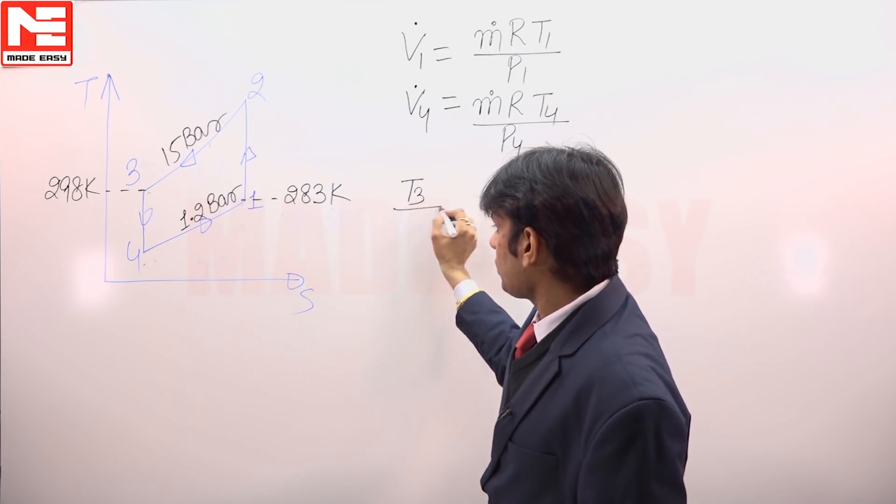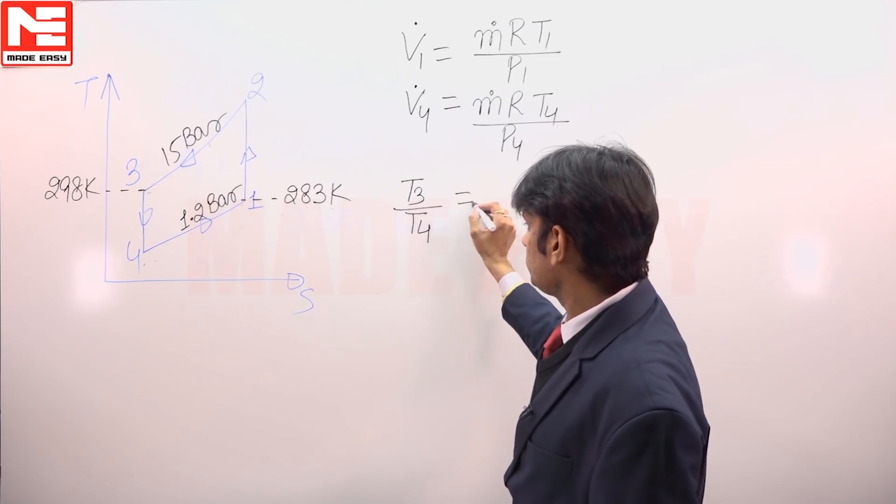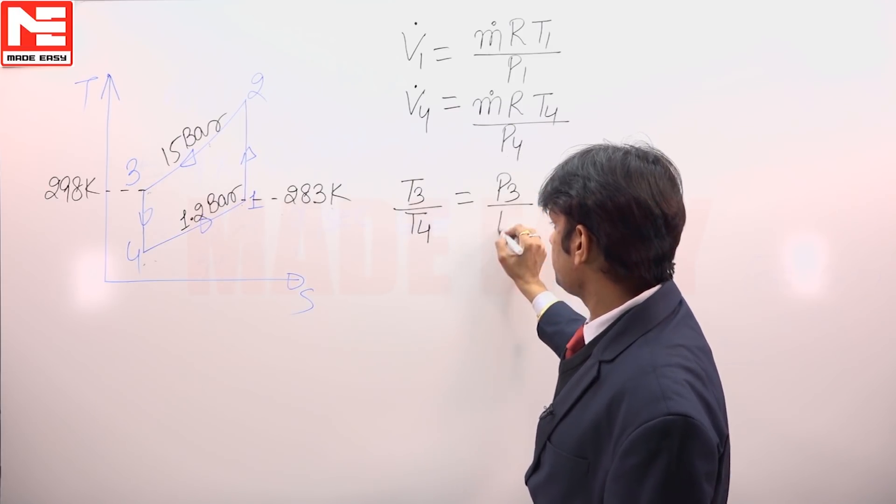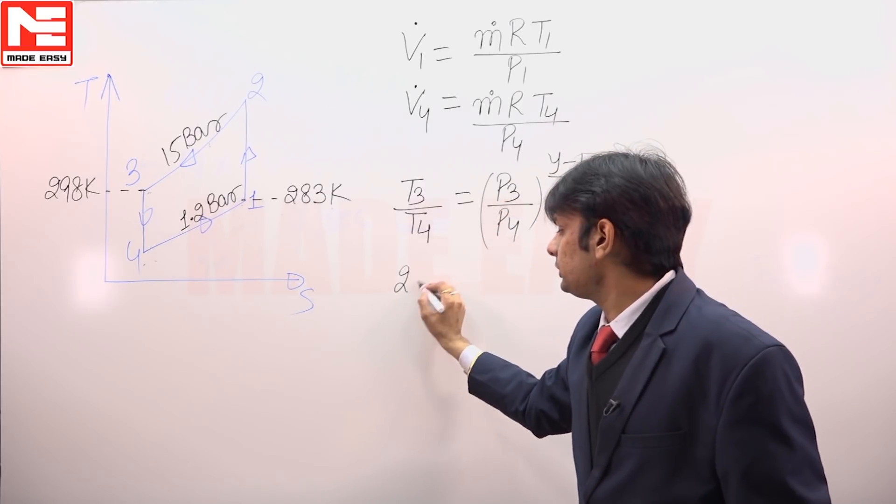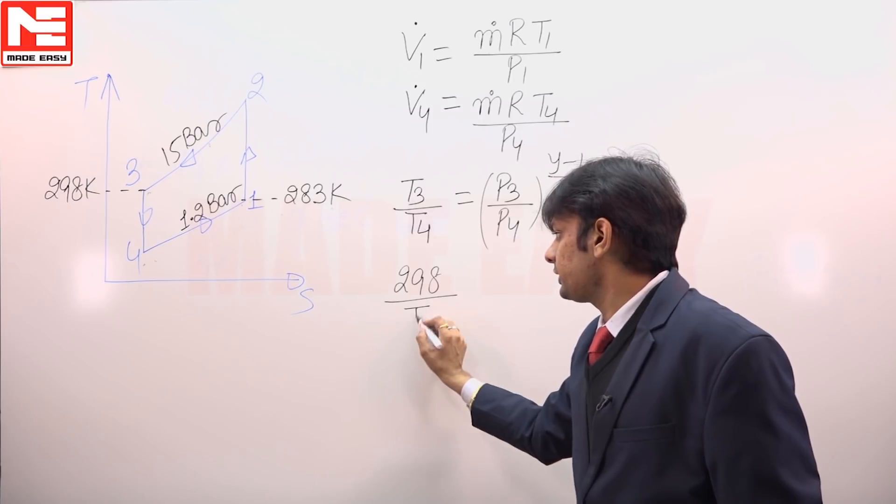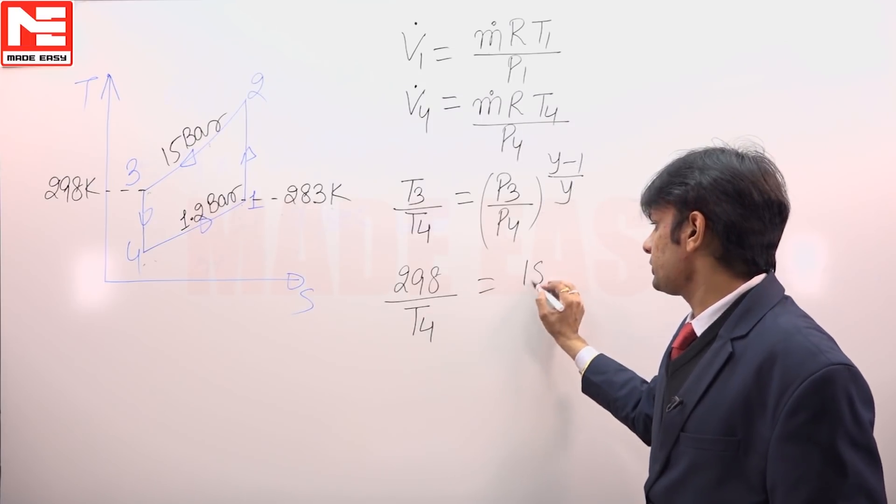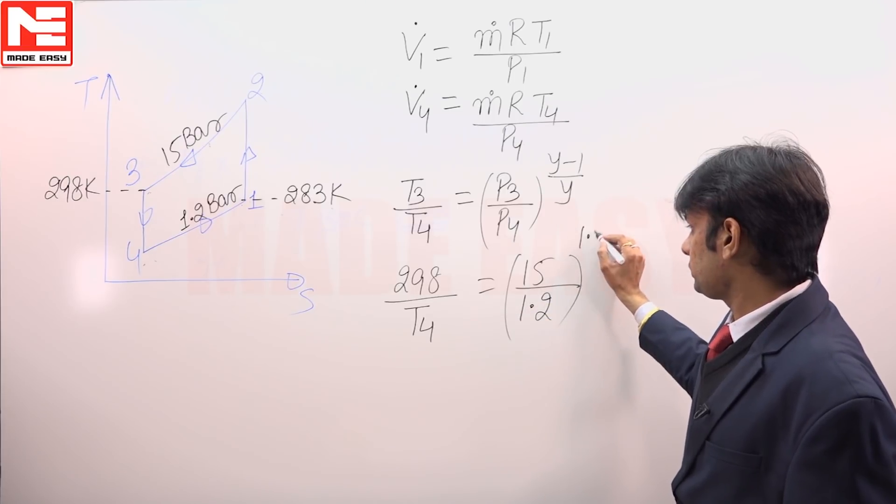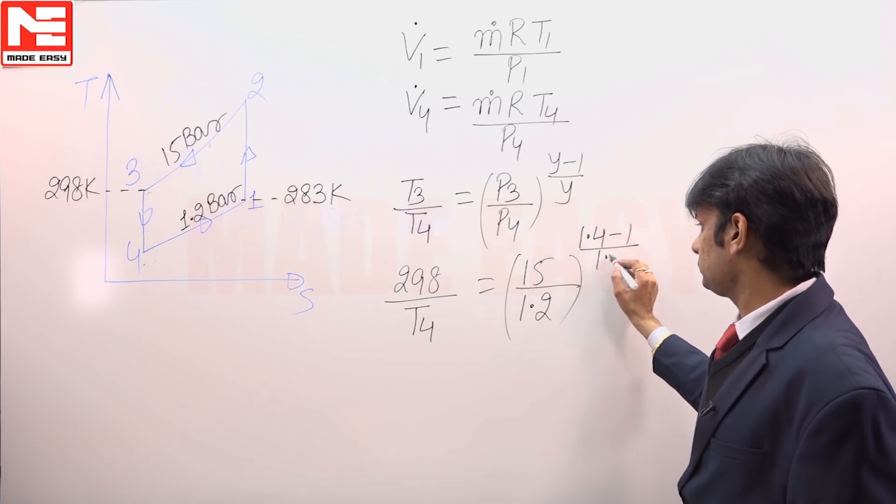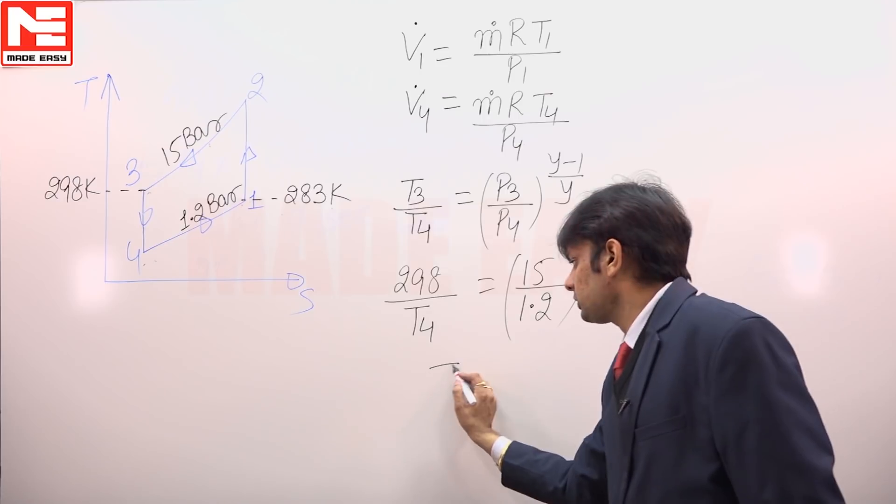By using isentropic expansion process 3 to 4, T3 upon T4 equals P3 upon P4 raised to power gamma minus 1 upon gamma. T3 is given as 298, P3 is given as 15 upon 1.2 bar, and the value of gamma for air is 1.4.